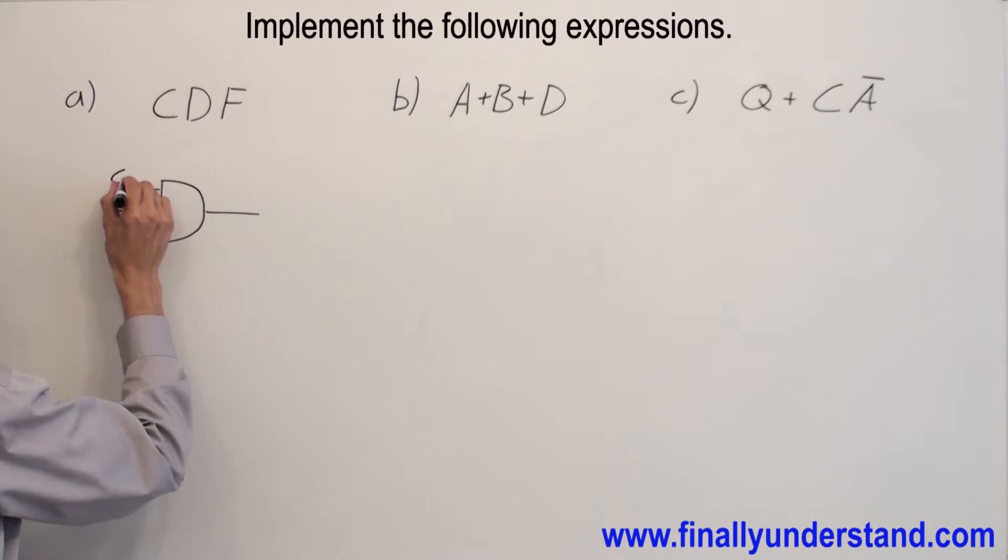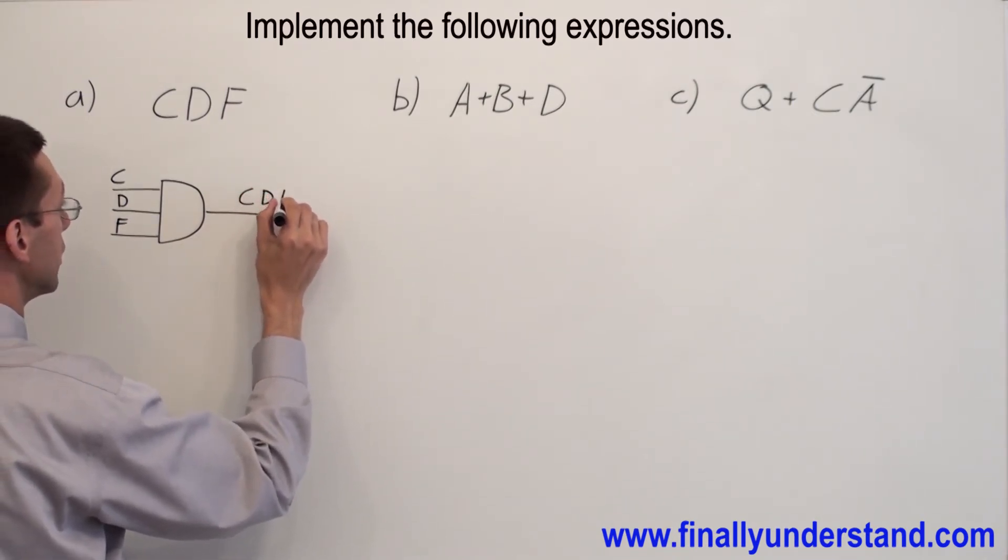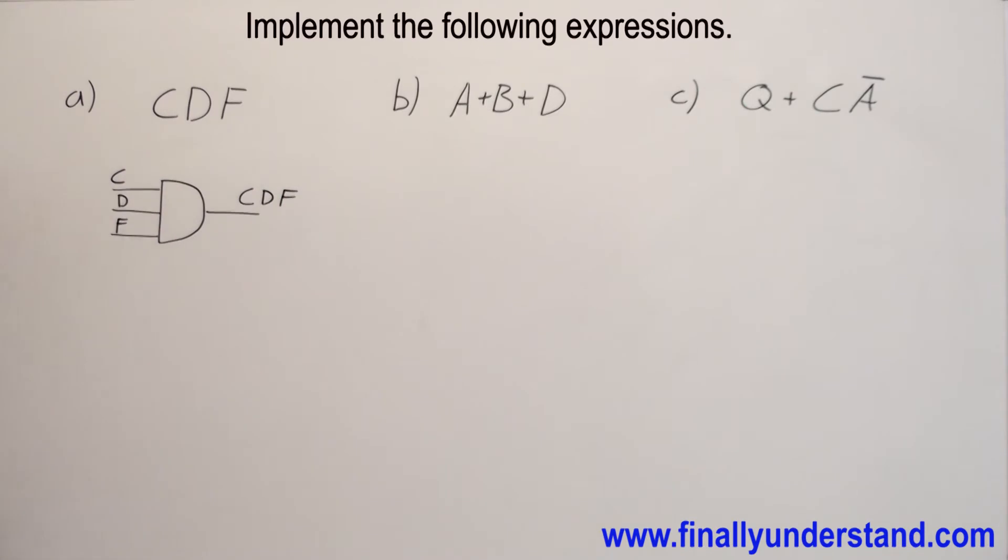So we have C, D, F. The output function is C times D times F. For example, sometimes you do not have a three input AND gate. So we are going to use the associative law, which says that we can combine two gates together.